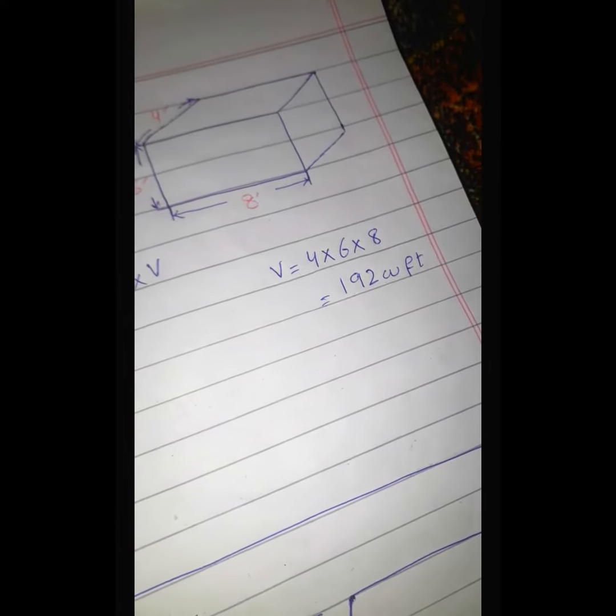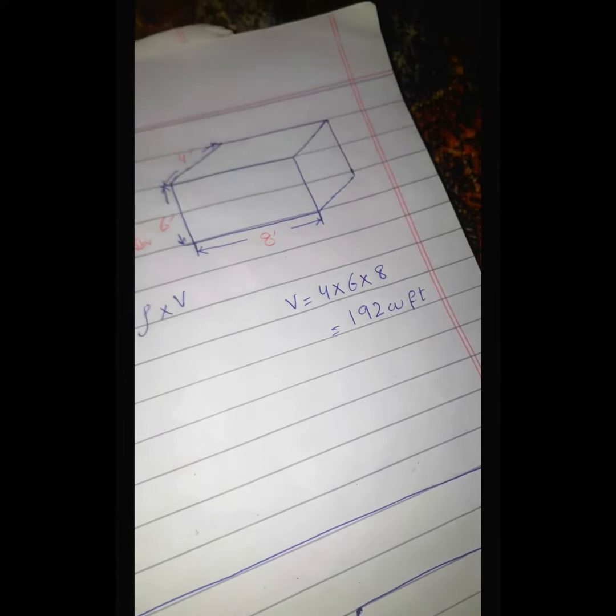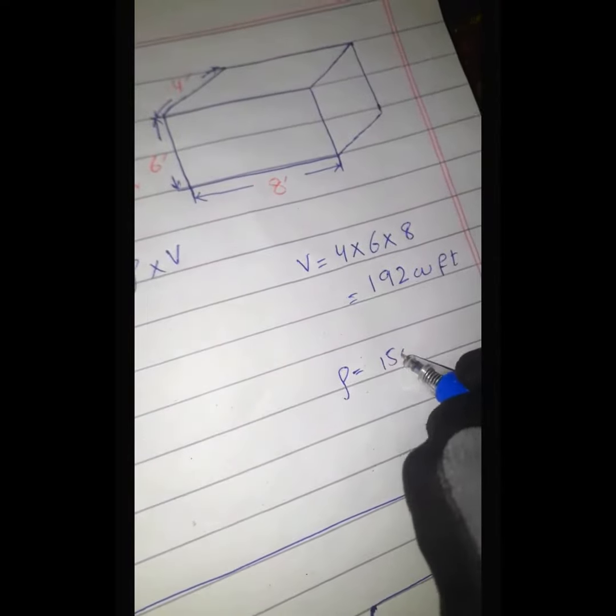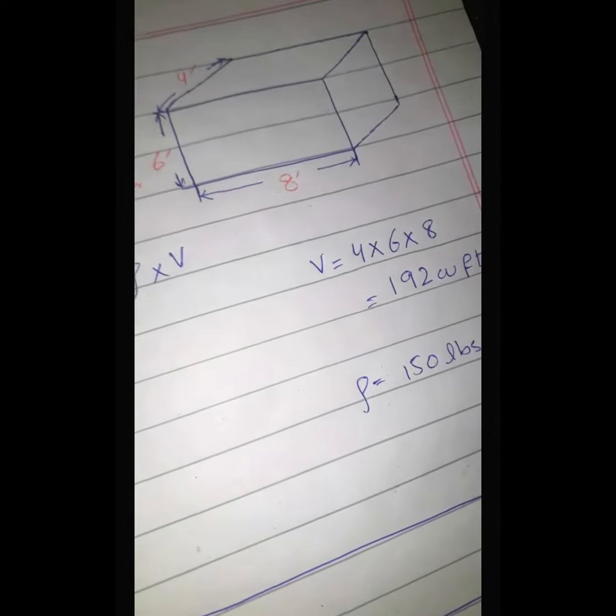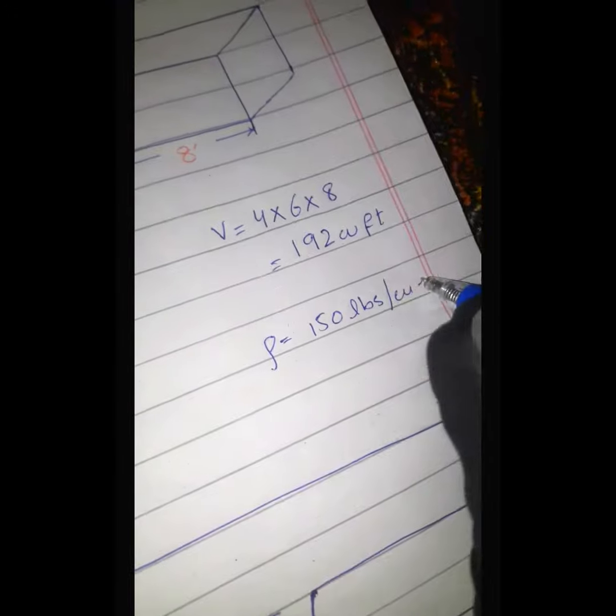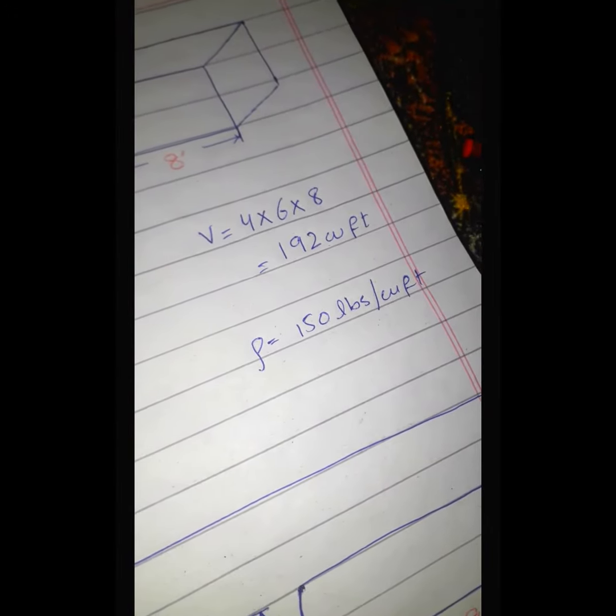At Google you will find the density of concrete block, which is equal to 150 lbs per cubic feet. It means it has 150 at one cubic feet.